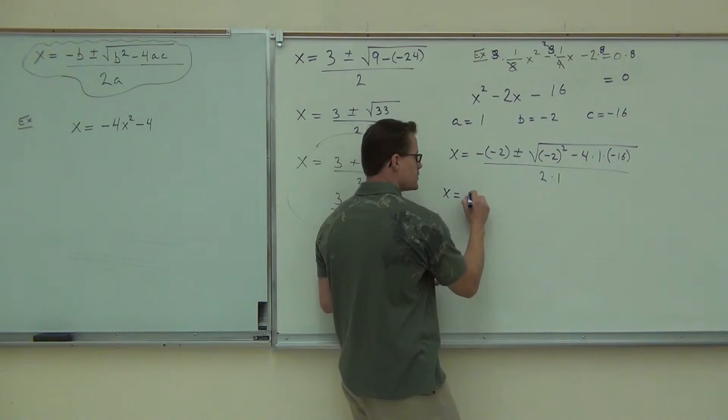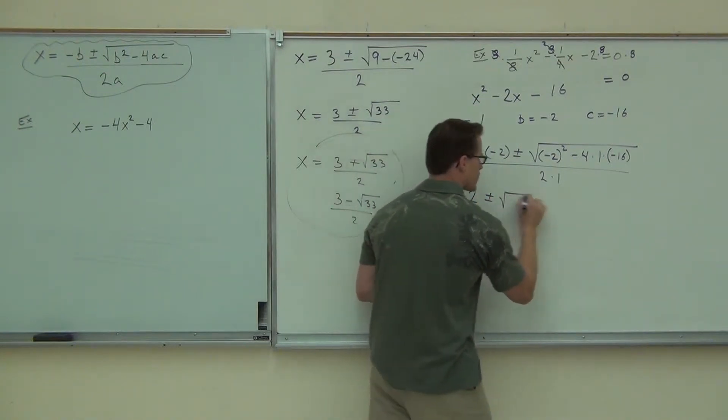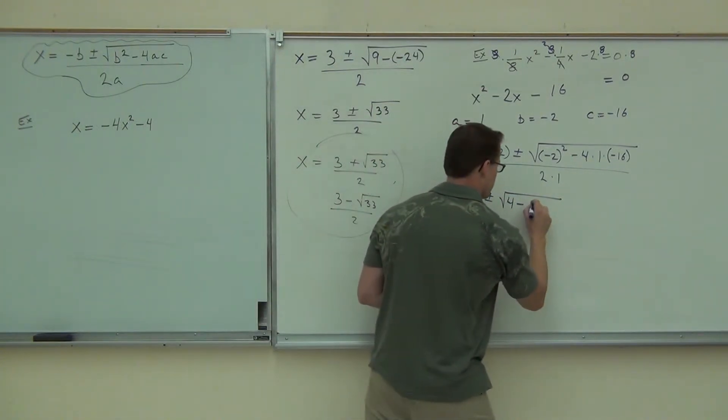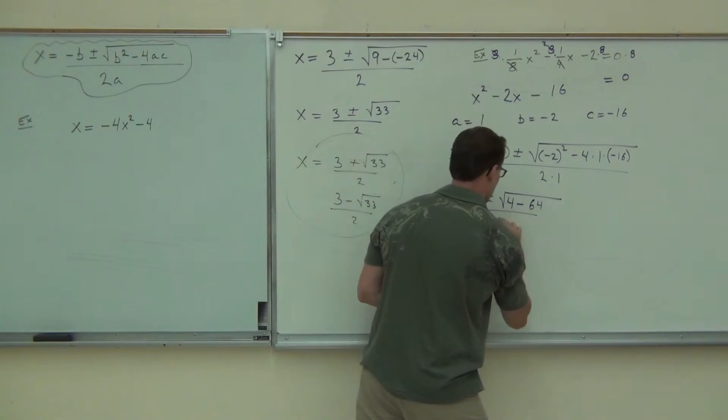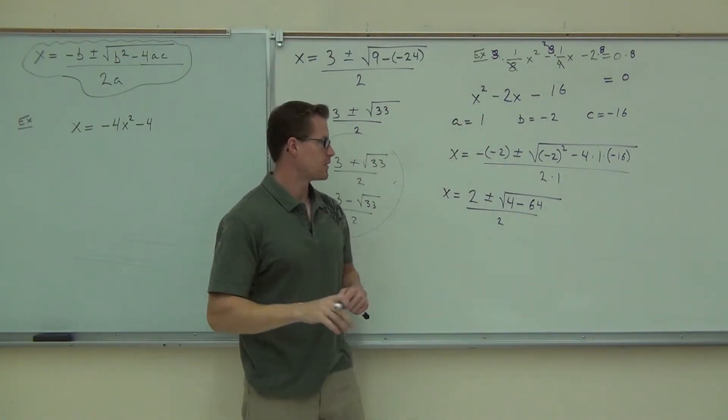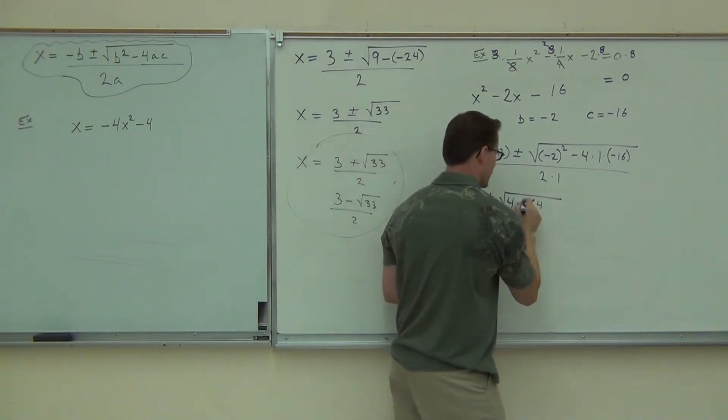So, negative negative two, well, that's two. Plus or minus the square root of negative two squared is positive four. Minus, you're going to do four times 16. That gives you 64. All over two. Raise your hand if you made it that far.